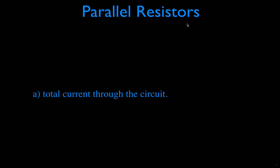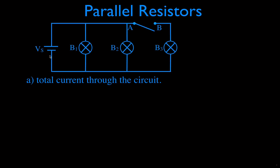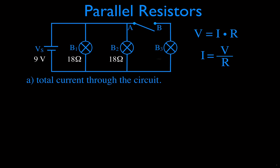Let's start with the current through this circuit. We have three bulbs, a switch that's open, and a voltage source, and we're going to close the switch. We're going to start with Ohm's law: V equals I times R. We want to know the total current, so we rearrange: current equals voltage divided by resistance. We have 9 volts and three 18-ohm resistors. The current rule tells us the total current equals the sum of the currents through each of the branches.